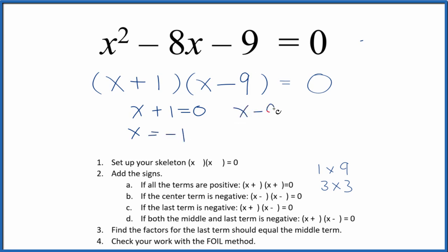Over here, x minus 9 equals 0, add 9 to both sides, x equals 9. If you put negative 1 in for x, you do the math, this whole side will equal 0. Likewise, if you put 9 in for x, you do the math, it'll equal 0 as well. So these are correct.